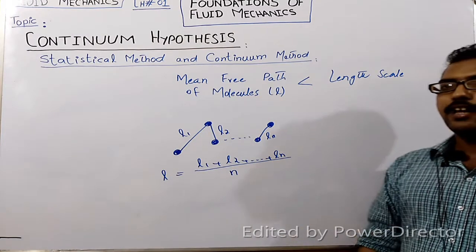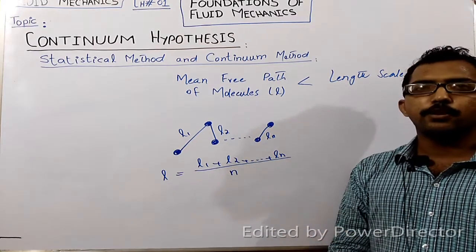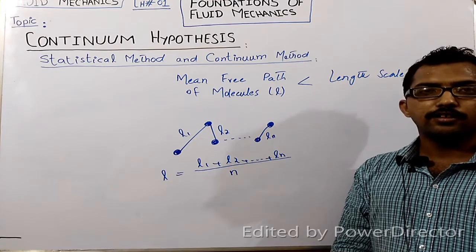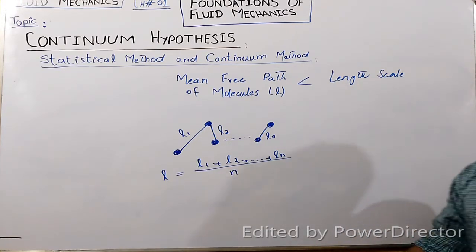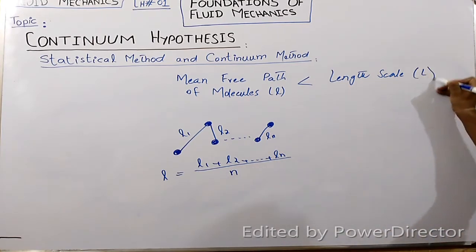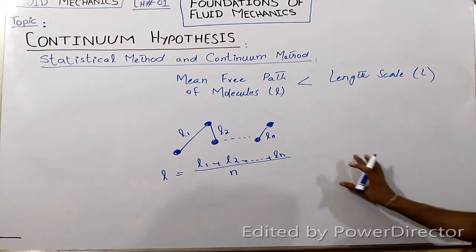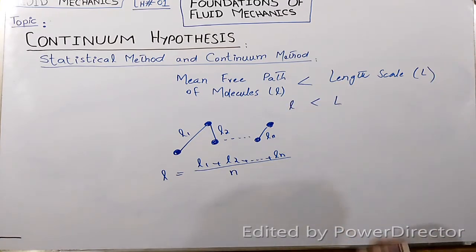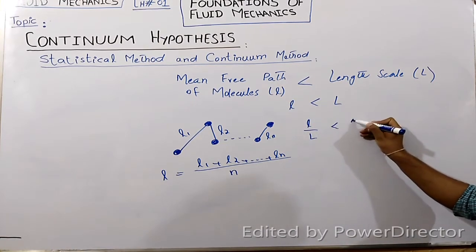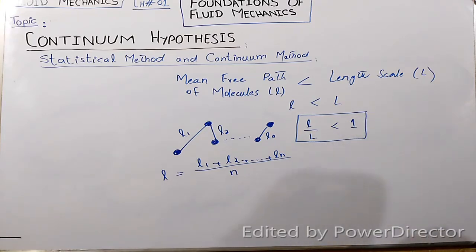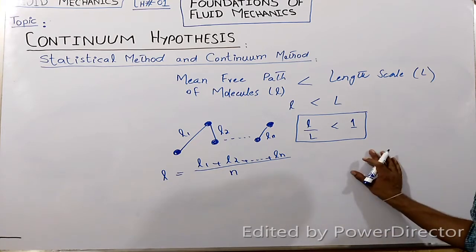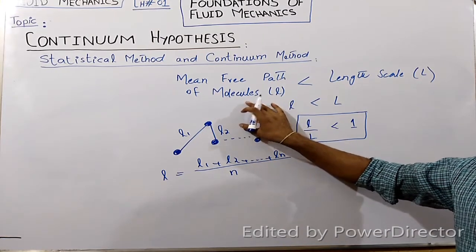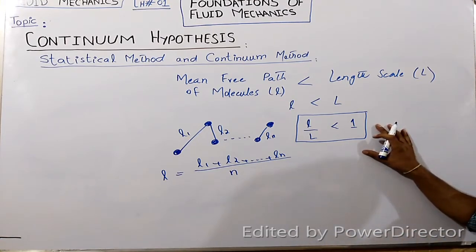The length scale is the size of the flow system — a body around which the fluid flows. For example, if the flow system is a cylinder, the length scale is the diameter of the cylinder, denoted by capital L. The necessary condition for the continuum hypothesis to be valid is that small l must be less than capital L, or the ratio l/L must be less than unity. In most cases, the mean free path is much smaller than the size of a macroscopic flow system, so this inequality is easily satisfied.